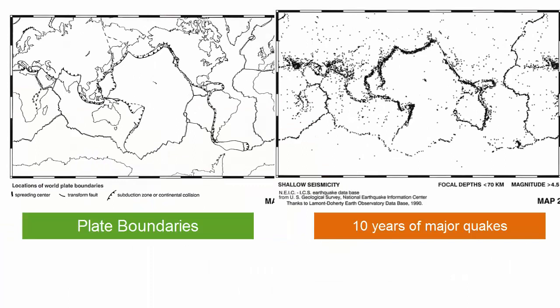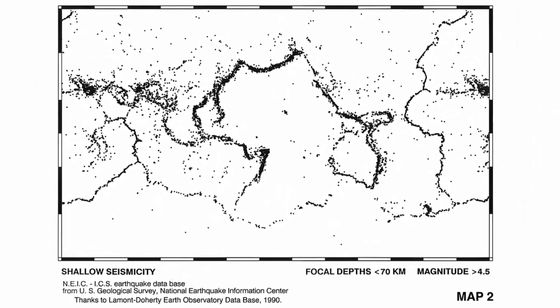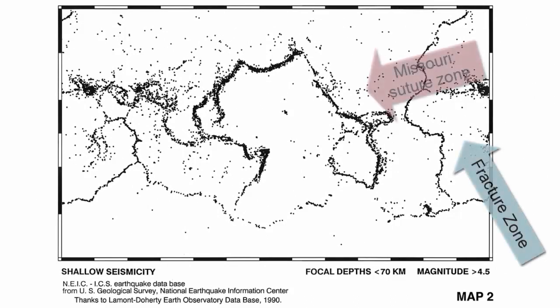This image of a decade's worth of major earthquakes on the planet shows that most of these earthquakes happen at plate boundaries and, in fact, mark the edges of these plates. You'll also notice earthquakes happening in areas where old plate boundaries have fused together, such as in fracture zones or old suture zones in the center of continents conjoined in the past.